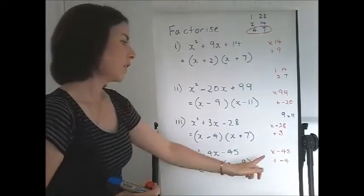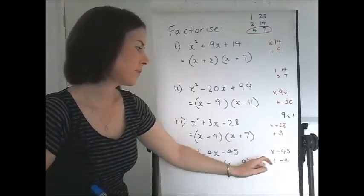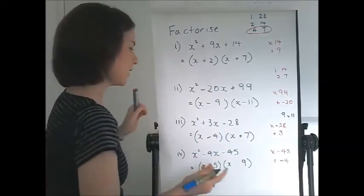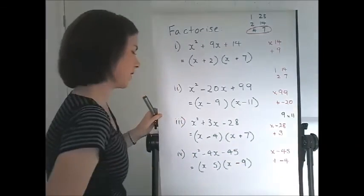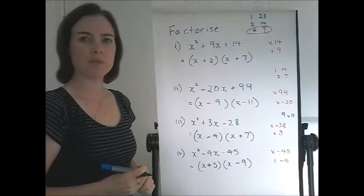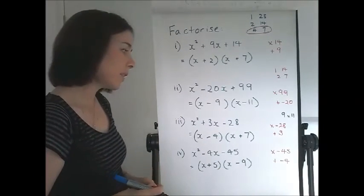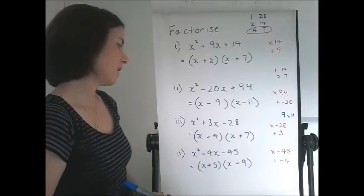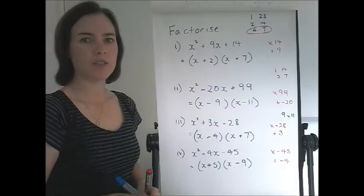Let's try that. We need opposite signs and the bigger number needs to be negative. So the 9 is negative. That makes the 5 positive. Check. Do they multiply to negative 45? Yes. Do they add to negative 4? They do.